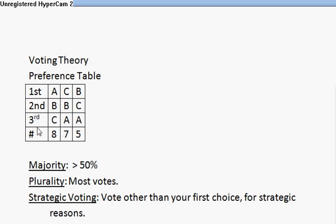What this preference table is telling us is that there are eight people who have A as their first choice, B as their second, and C as their third, while there are seven people that have C as their first, B as their second, and A as their third. So we have a total of 20 people's votes and opinions represented in this table.